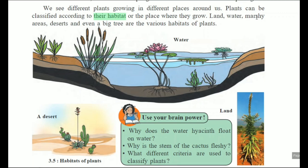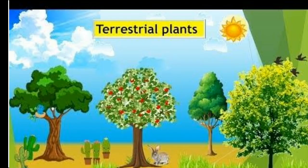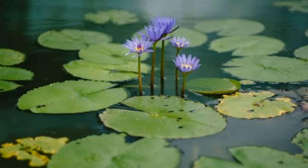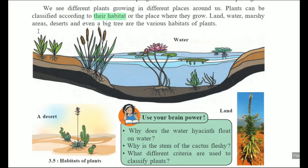Land, water, marshy areas, deserts, and even a big tree are various habitats of plants. Plants that grow on land are called terrestrial plants. Plants which grow in water are called aquatic plants.